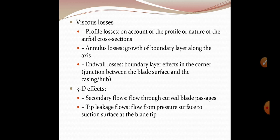Viscous losses are profile losses, annulus losses, and end wall losses. Profile losses are on account of the nature of the airfoil cross-section. Annulus losses are growth of boundary layer along the axis. End wall losses are boundary layer effects in the corner, that is the junction between the blade surface and the casing or hub.